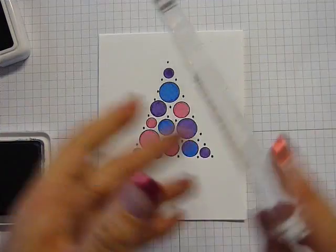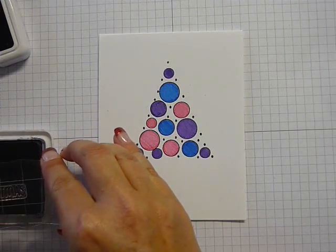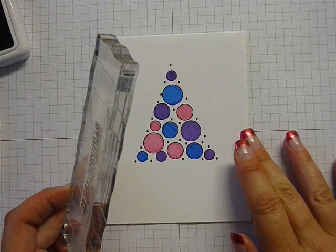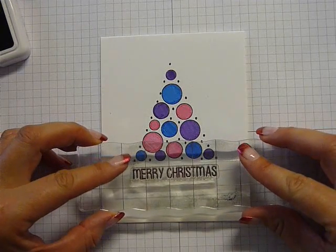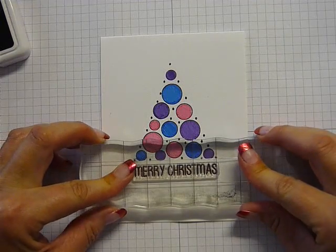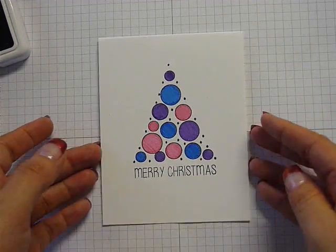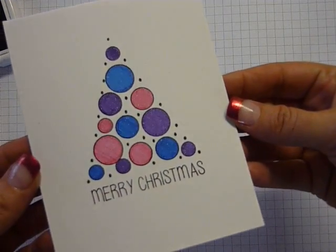Now the base for my tree is the sentiment and I don't even really have to line it up with my grid or anything. I just use the bottom of the tree to line that up and I thought that sentiment worked really well with this style of Christmas tree and that's basically it for that card. It's all glittery and shiny. You've got a nice one layer card very very easy to make.